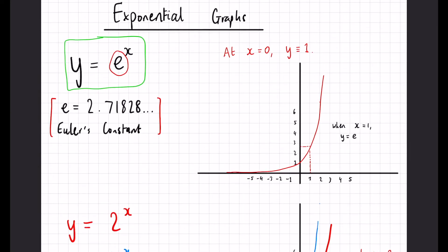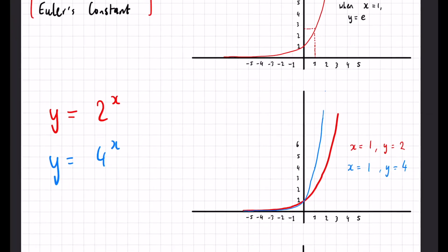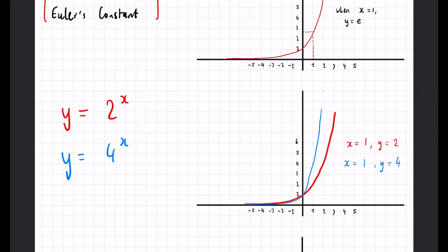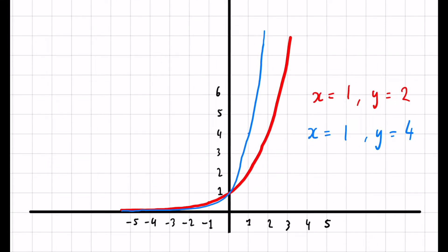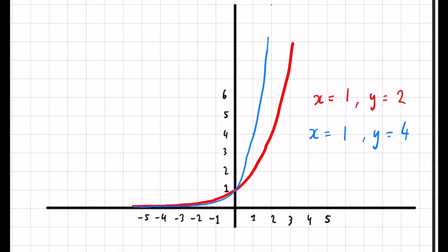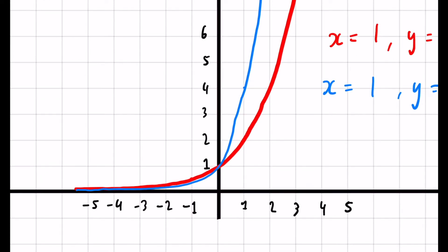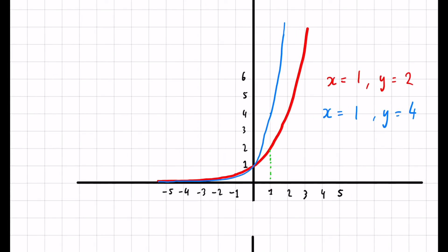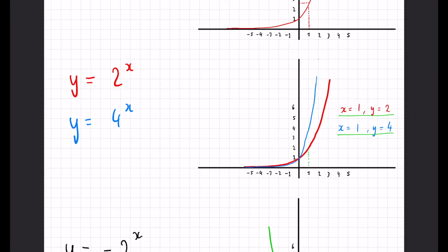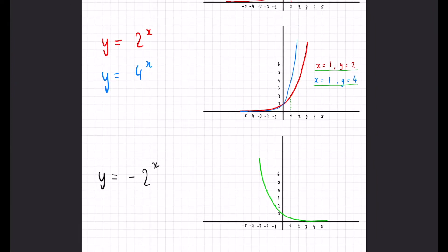Looking at another number, we have y equals 2 to the x, which is slightly less than e. You can see the red line is a lot more gradual in the way it steepens, compared to y equals 4 to the x, which starts shallower and then shoots straight up. That's because if you square, cube, or raise a larger number to higher powers, the values grow very quickly — so the bigger the base, the steeper the graph. Both still have a y-intercept of 1, and when x is 1, y equals 2 and y equals 4 respectively.